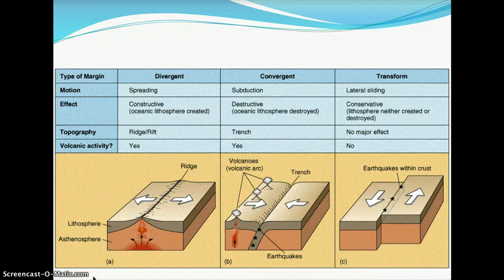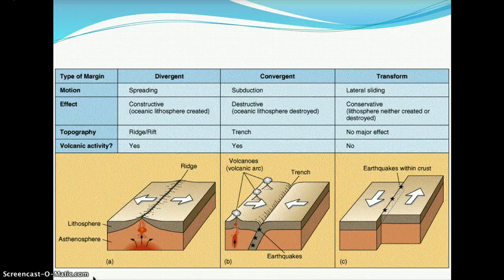The third type, shown in picture C, is the transform plate boundary, where you have lateral sliding. It is conservative in effect — the lithosphere is neither created nor destroyed — so there is no major topographic effect and volcanic activity does not occur here.